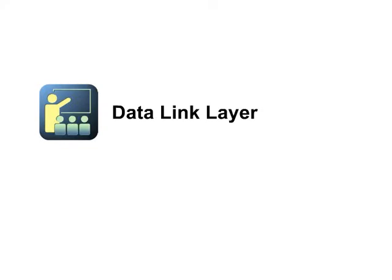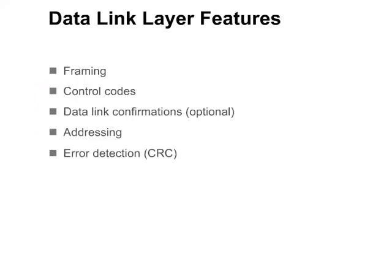Now let's take a look at the DataLink layer. The DataLink layer provides the following features: framing, control codes, optional DataLink confirmations, addressing, and error detection.